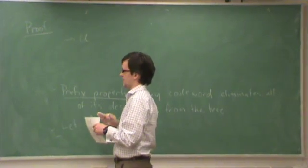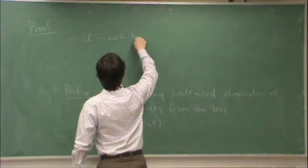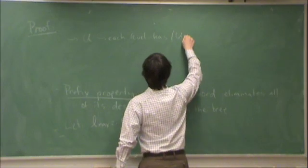then each level of the tree has cardinality of U branches.